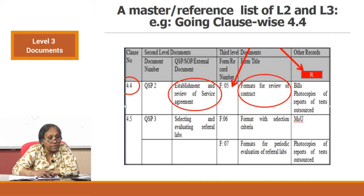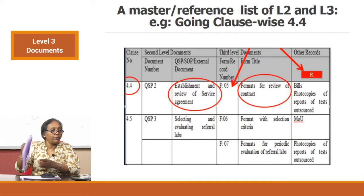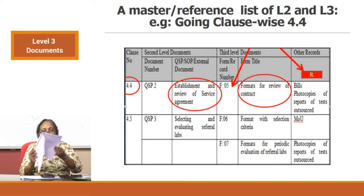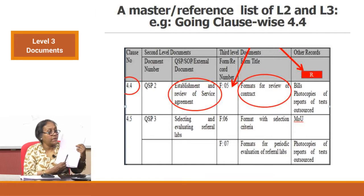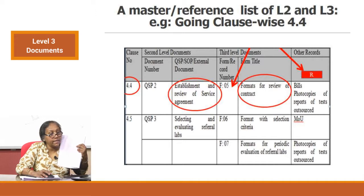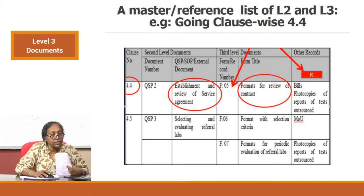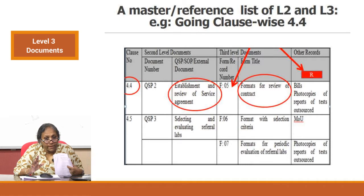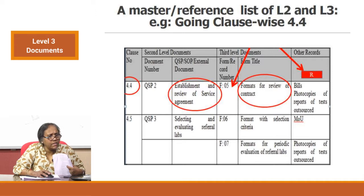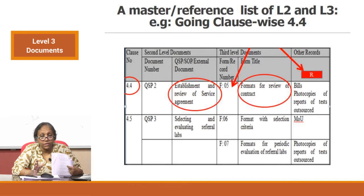Assume you are looking at clause 4.4 — your quality manual — and in your Level 2 documentation you have QSP number 2, which is the establishment and review of service agreement. Clause 4.4 is your service agreement. This laboratory has listed the Level 2 documents alongside the Level 3 documents in the same table, with the Level 3 document labelled F05 — F for format. That format is for the review of contract. Service agreement and review of contract are terms the standard uses for registration.